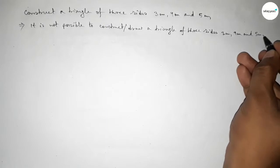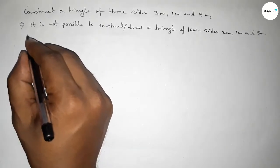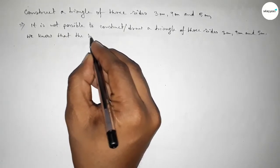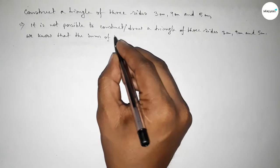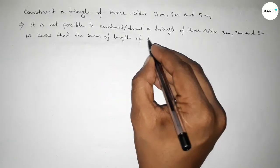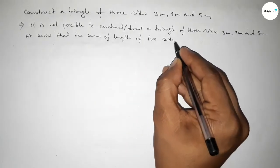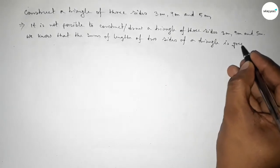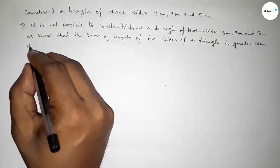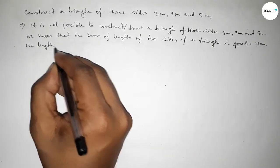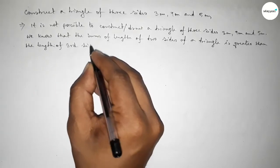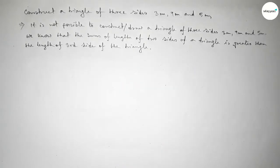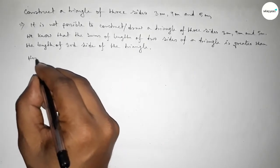We cannot draw a triangle with these sides because we know the condition to draw a triangle: the sum of the length of two sides of a triangle is always greater than the length of the third side of the triangle. This is the condition to construct or draw a triangle.